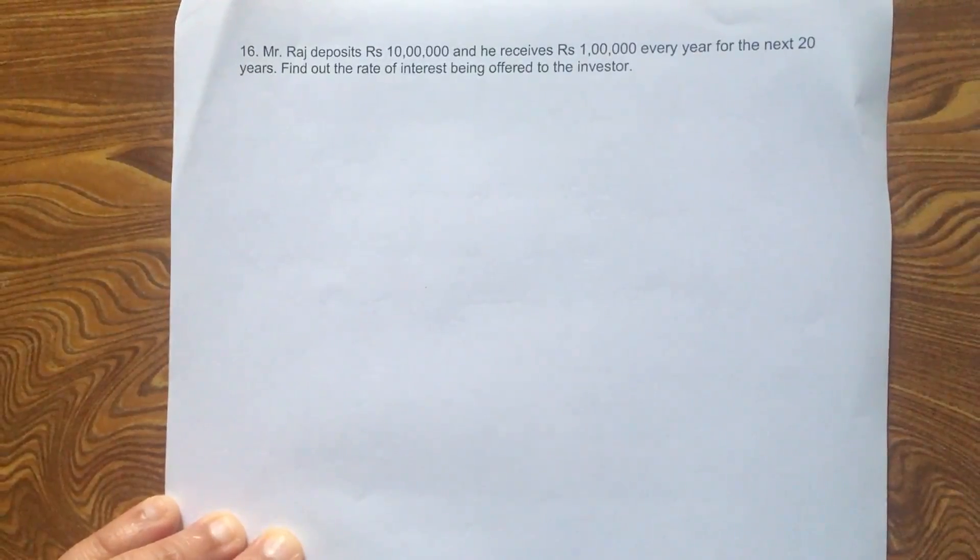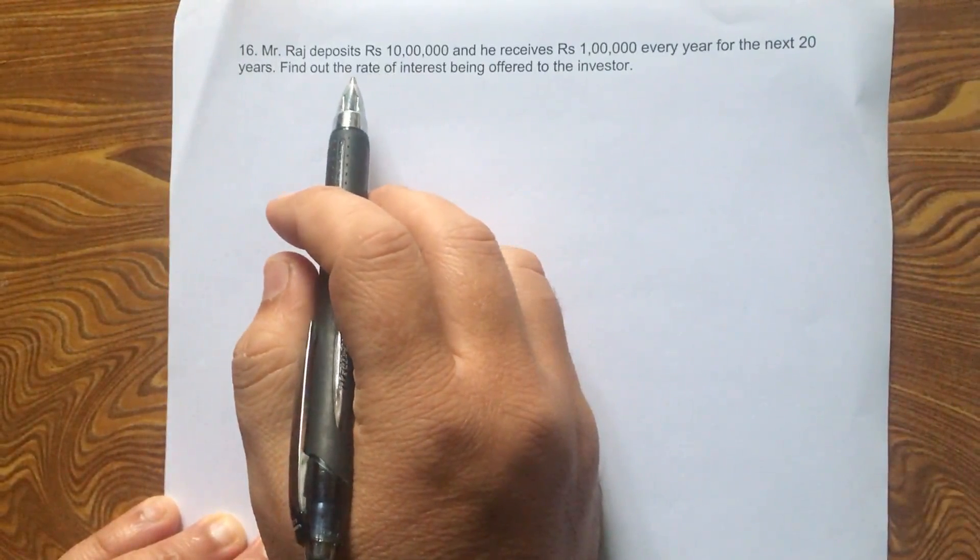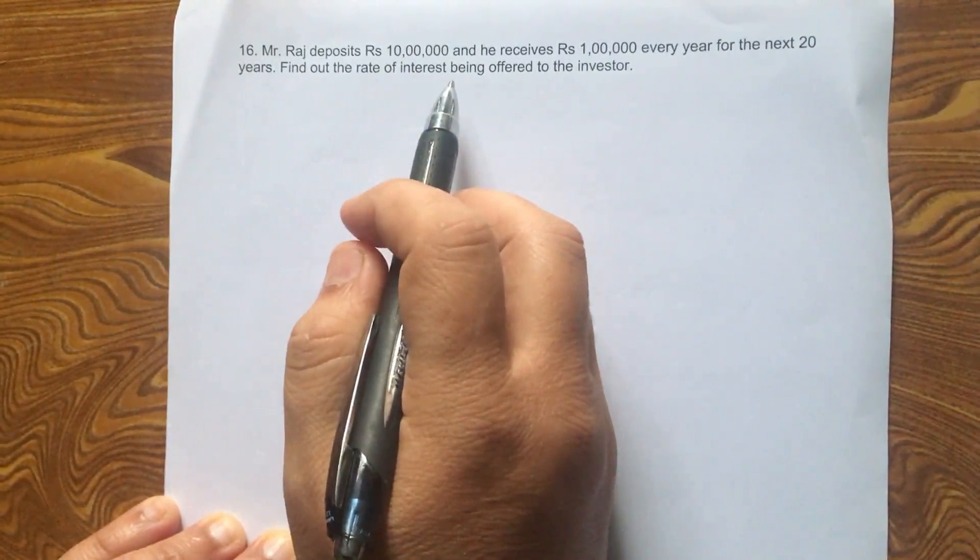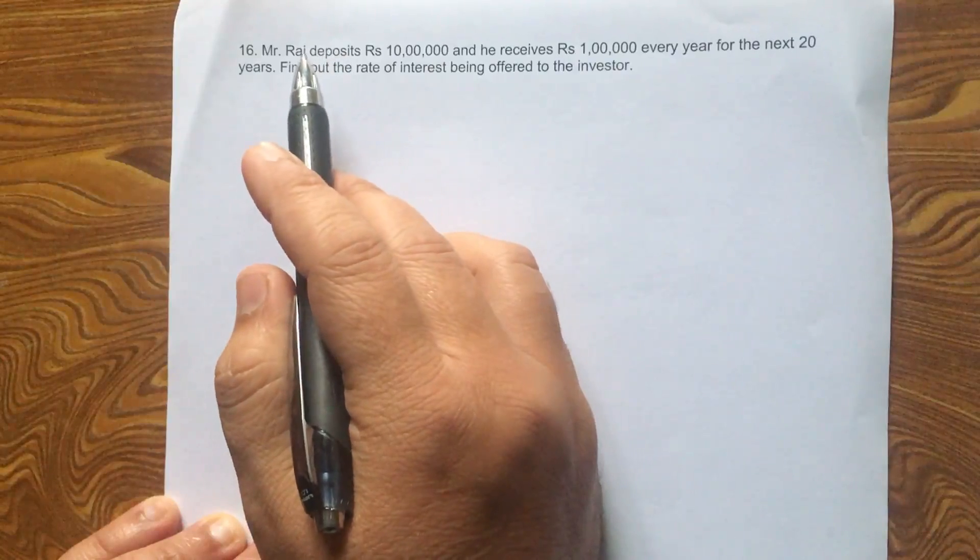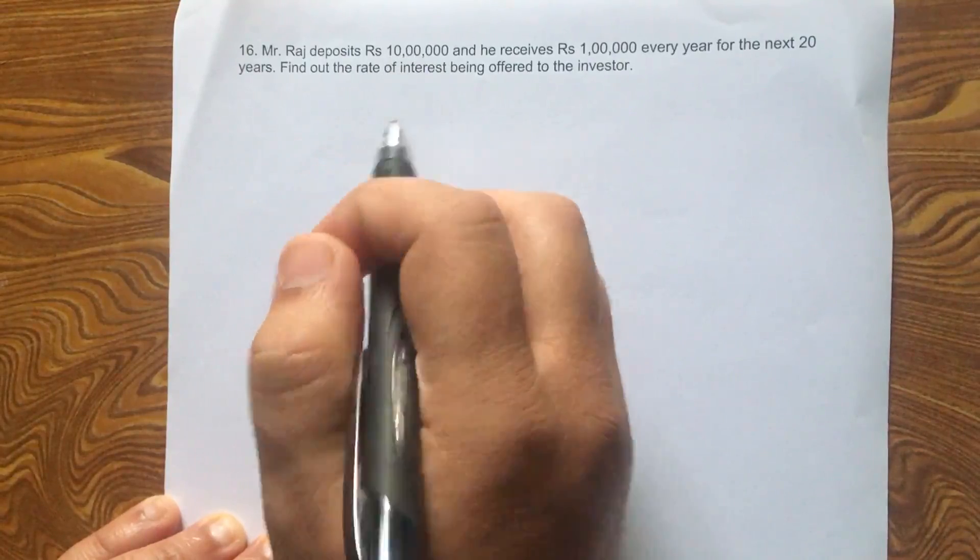Now what kind of a problem is this? What do we know and what do we need to find out? Now we have to find out the rate of interest. What do we know? We know that Mr. Raj deposits rupees 10 lakhs or rupees 1 million today.